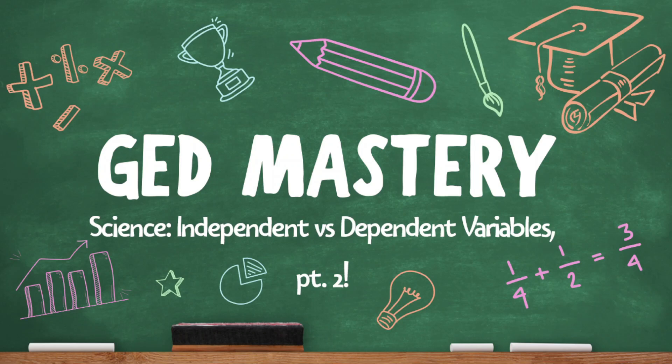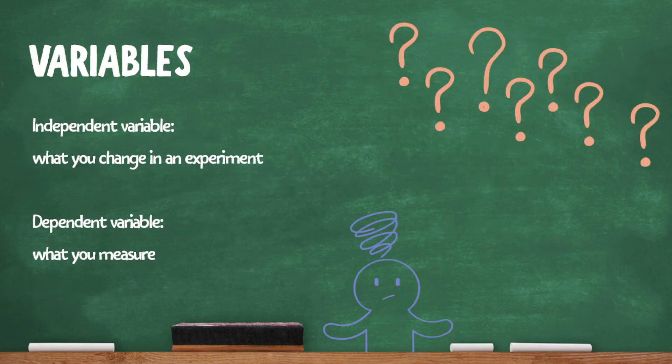Welcome to GED Mastery. Let's do some more practice with independent and dependent variables. An independent variable is what you change in an experiment, and the dependent variable is the effect of that change — you can also think of it as what you measure in the experiment.